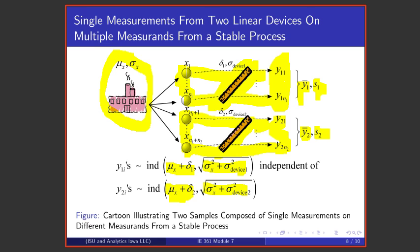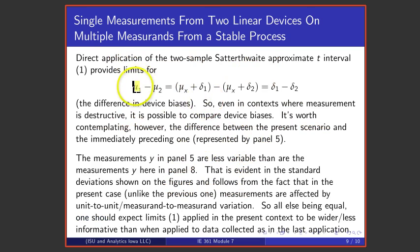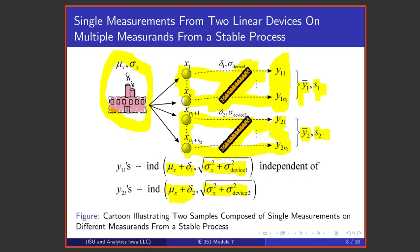What that means is that if we apply the T interval, we get an interval for the difference in mu one and mu two. That's process mean plus delta one minus process mean plus delta two. I've still got a difference there that is the difference in the two device biases. So even where I can't make multiple measurements on a single measurand, it's possible to do inference using this two sample methodology for a difference in device biases.